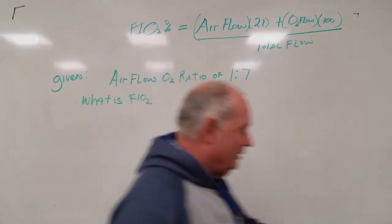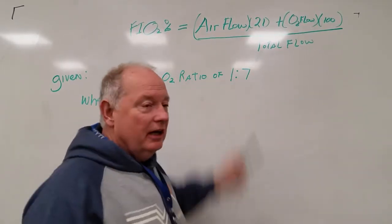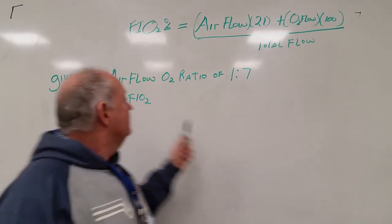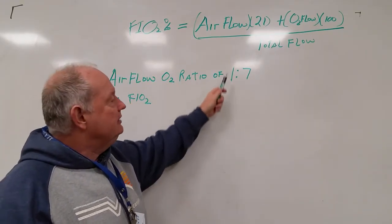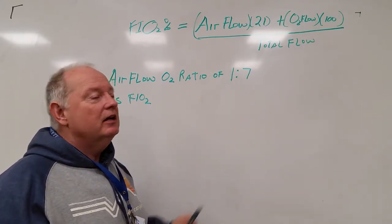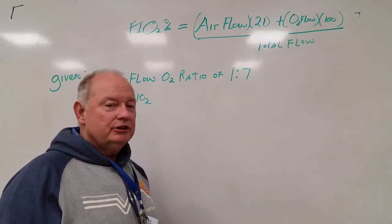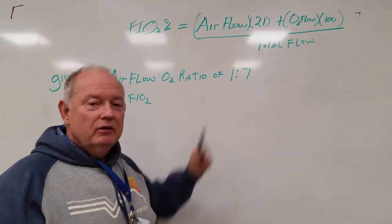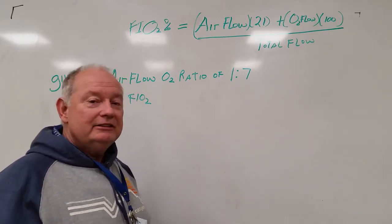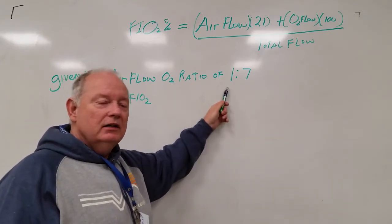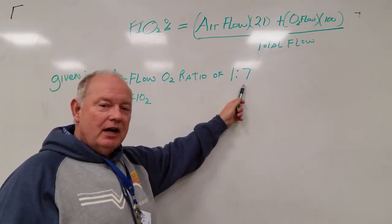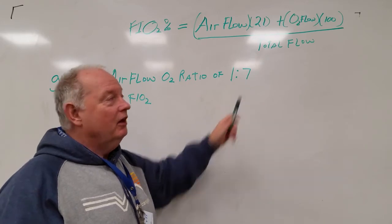So what do we have? Let's take a look at this. What is our air flow? This is an air flow oxygen ratio, which means the first number is air and the second number is oxygen. This ratio can be set to any number you want, but let's just set the ratio to one. That would mean one liter of air to seven liters of oxygen. Now we have our flows.